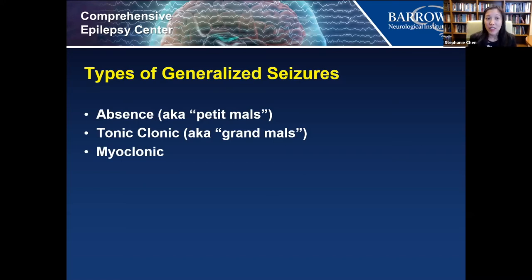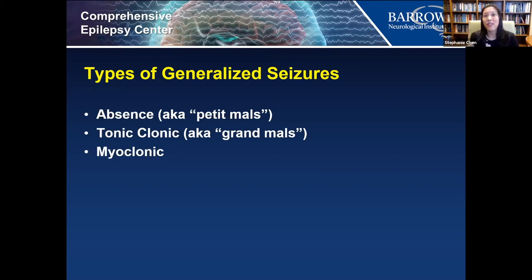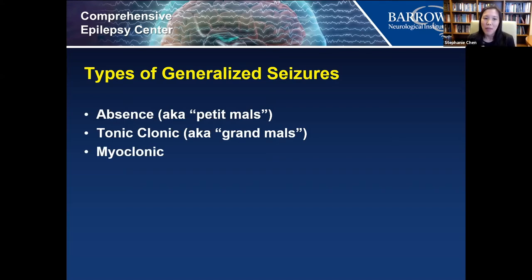Another type of generalized seizure is the tonic-clonic seizure, or grand mal seizure — the big scary seizure we traditionally see on TV, where the patient is on the ground, foaming at the mouth, eyes open and deviated, head to the side, with stiffening and shaking of the limbs. Patients with generalized seizures can also have myoclonic jerks — momentary jerks of the limbs, body, or head. In some types of epilepsy, myoclonic jerks may build up into a full tonic-clonic seizure.